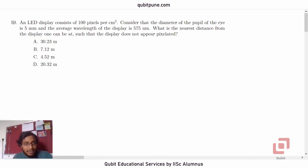So this is 59th from the paper. An LED display consists of 100 pixels per cm². Consider that the diameter of the pupil of the eye is 5 mm and the average wavelength of the display is 575 nm. What is the nearest distance from the display one can be at such that the display does not appear pixelated?